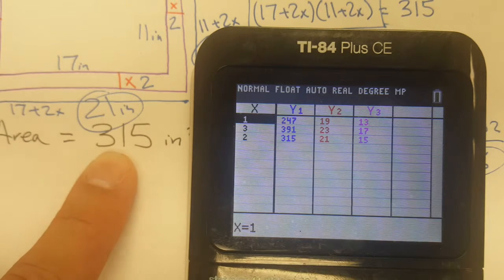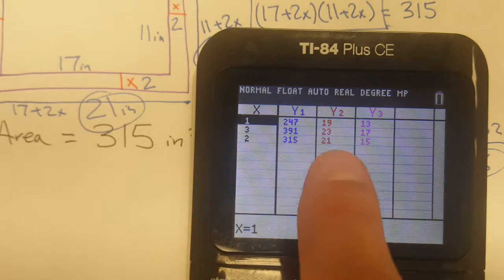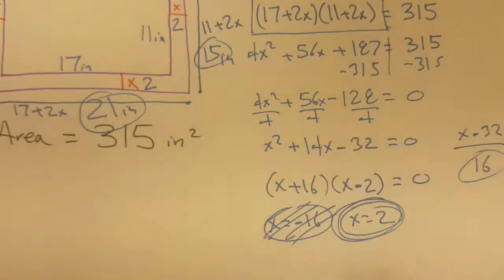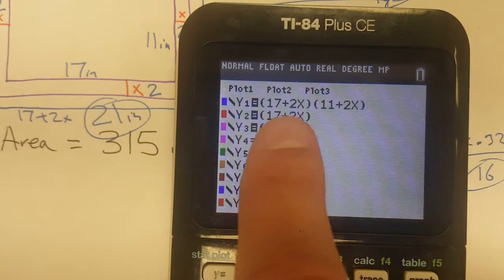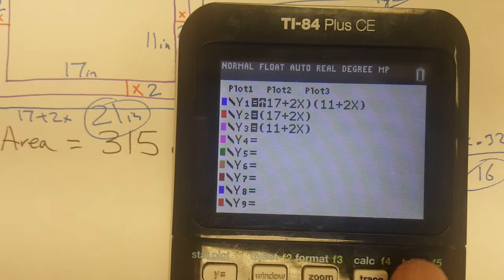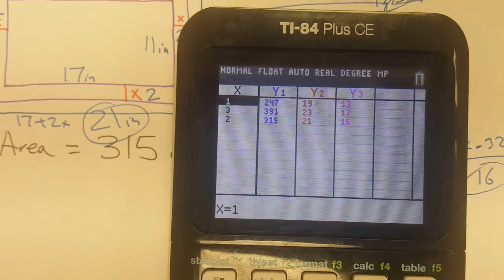You see where my answer was 2 inches, and it not only gives me my area but also gives me my length and my height. The calculator is extremely powerful. You plug stuff in, guess and check until you get it, or you can do all the algebra. I leave the choice up to you. That's it, we'll see you in class, goodbye.